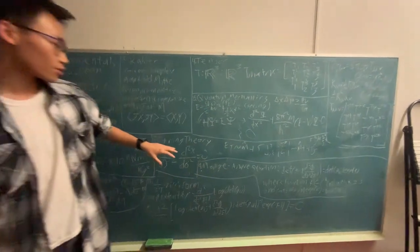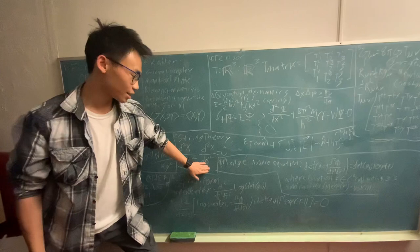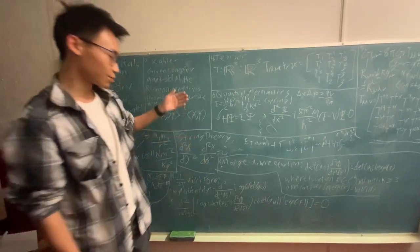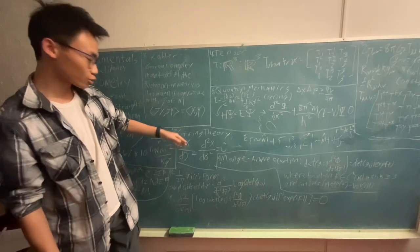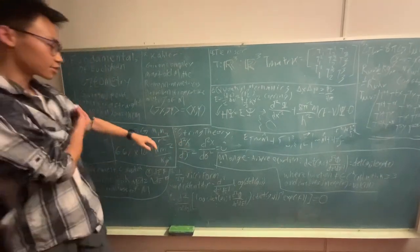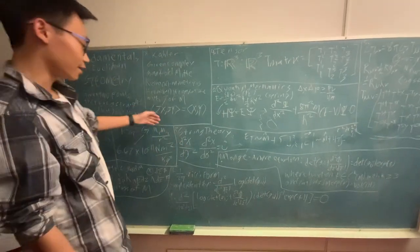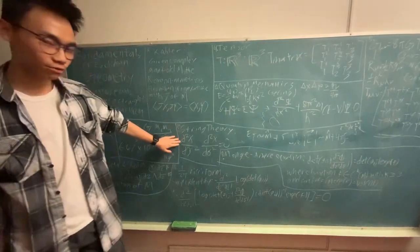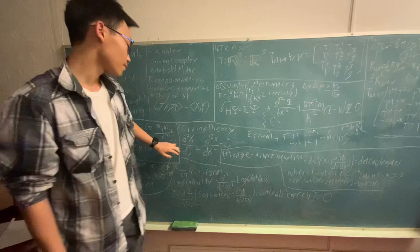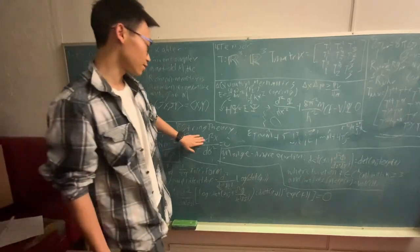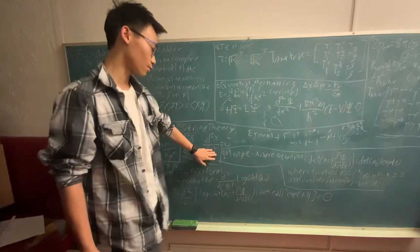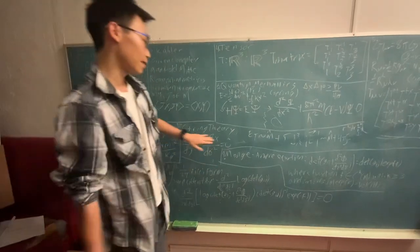The strings are parameterized by sigma, and the position of a string is given by x. The change in a string's position is given by this equation, which is the second derivative of x with respect to time, minus the second derivative of x with respect to its length, or sigma, and that will equal zero.